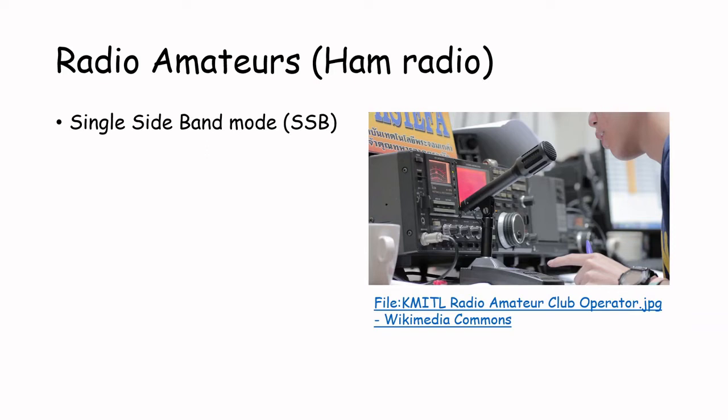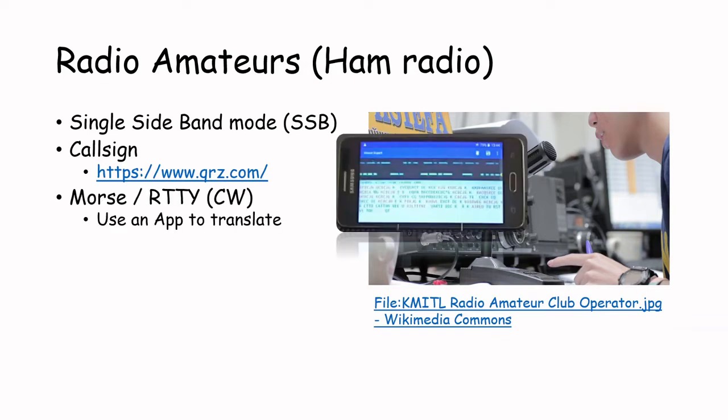More details about SSB mode will be covered in a later video. Radio operators have a unique identifier number, the so-called call sign. In online databases like QRZ.com, you can identify who is currently communicating. Radio amateurs are sometimes sending data like Morse code or radio teletype codes. You can receive and translate this data with an app on your smartphone downloaded from your app store. The most common way radio amateurs communicate is CQing or DXing.